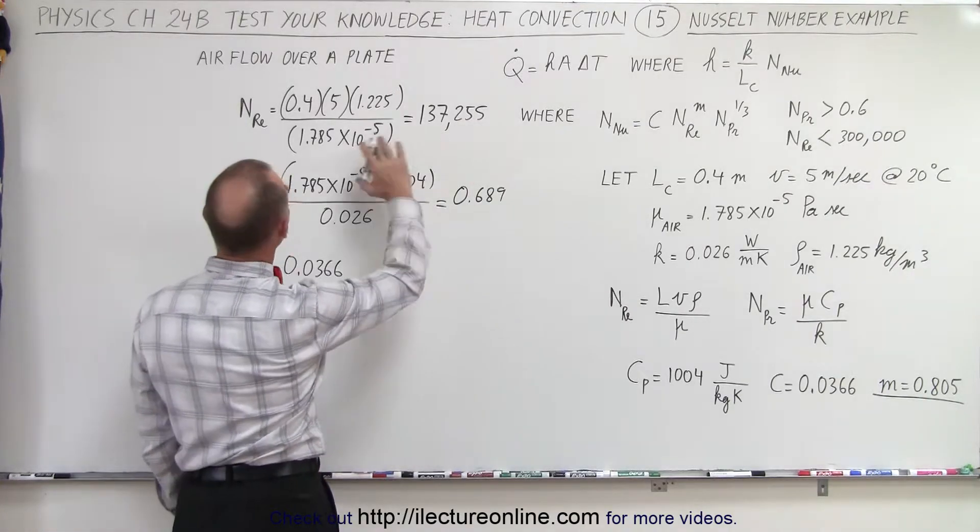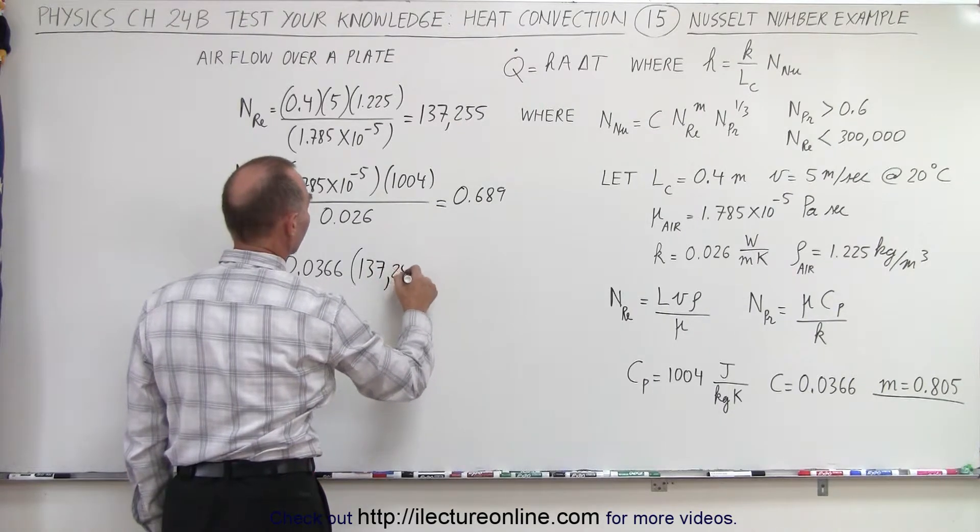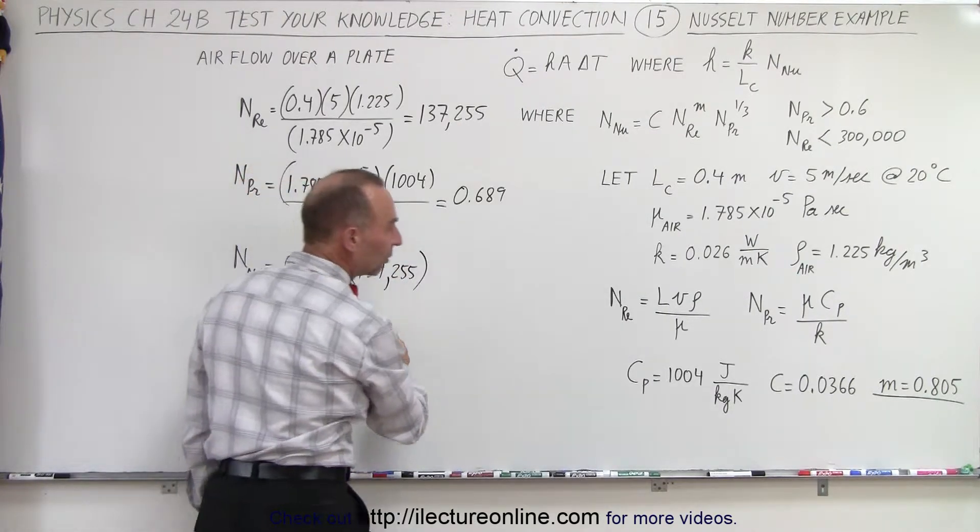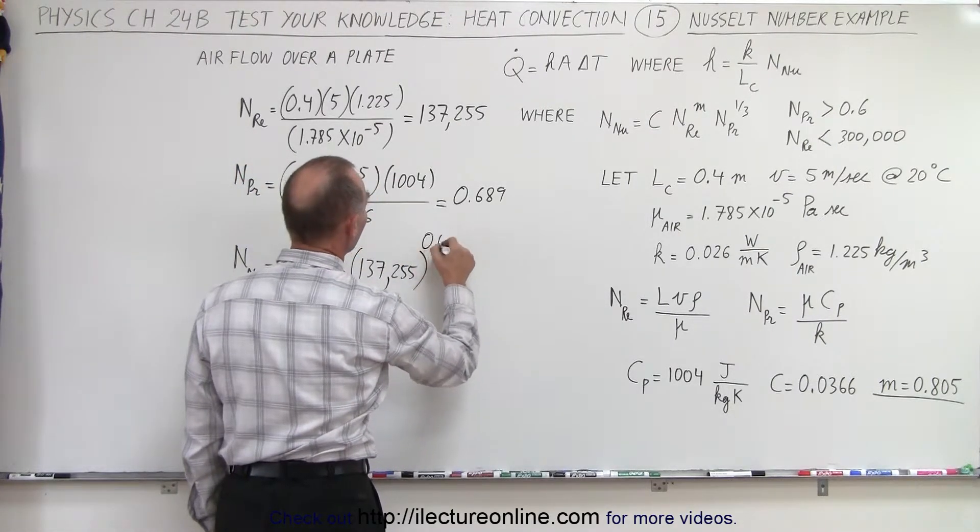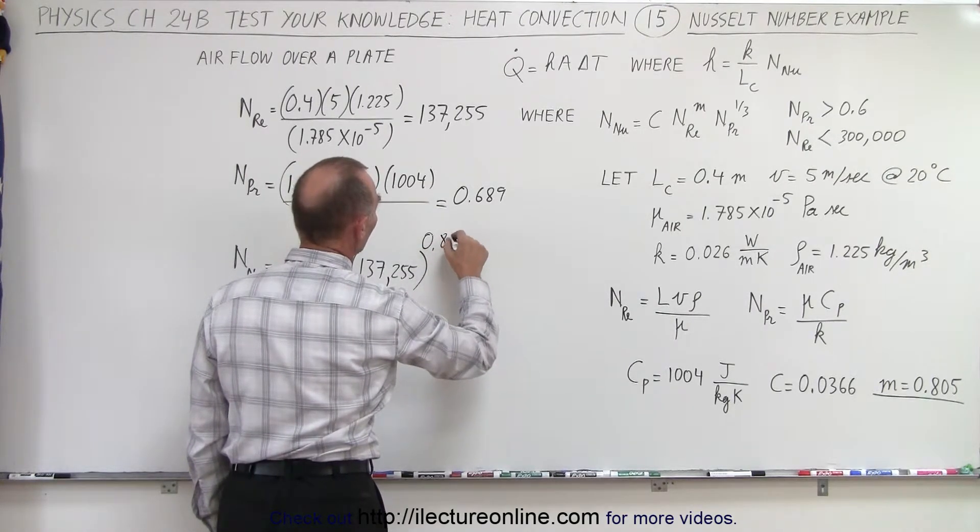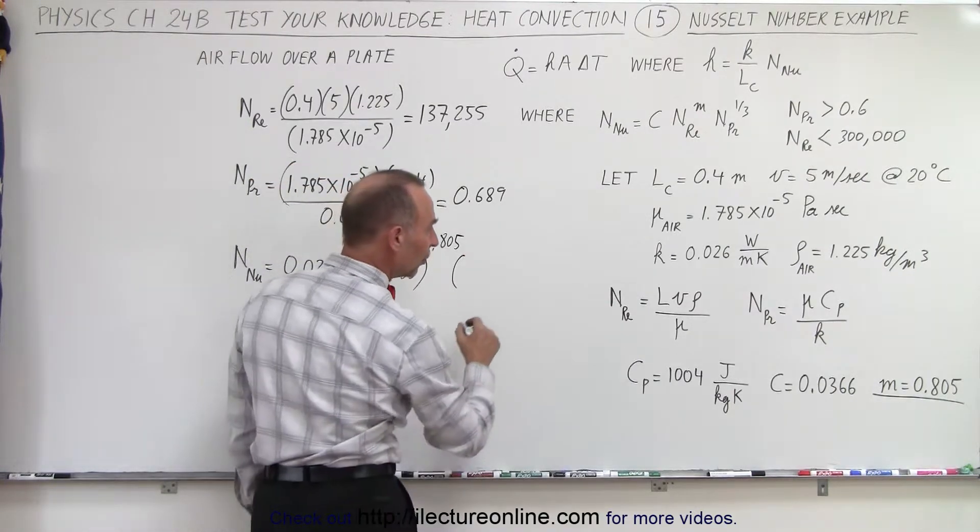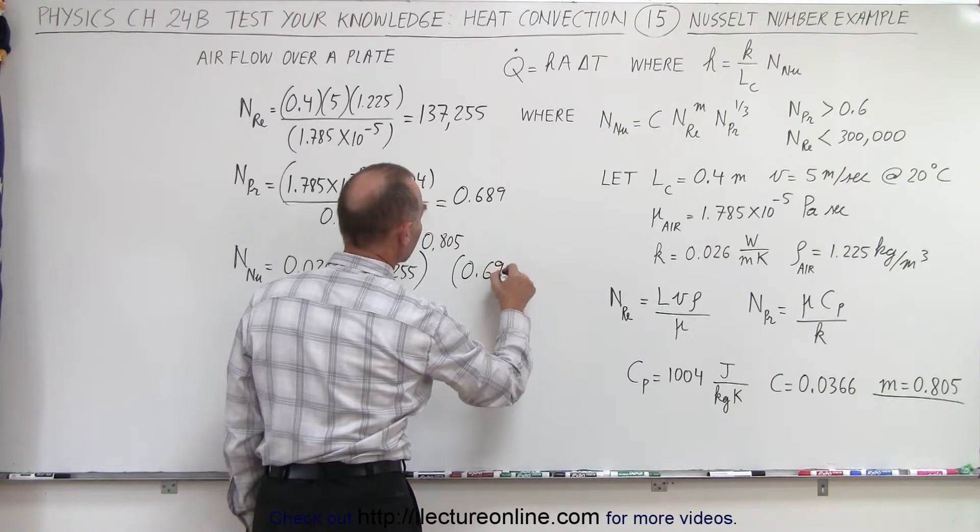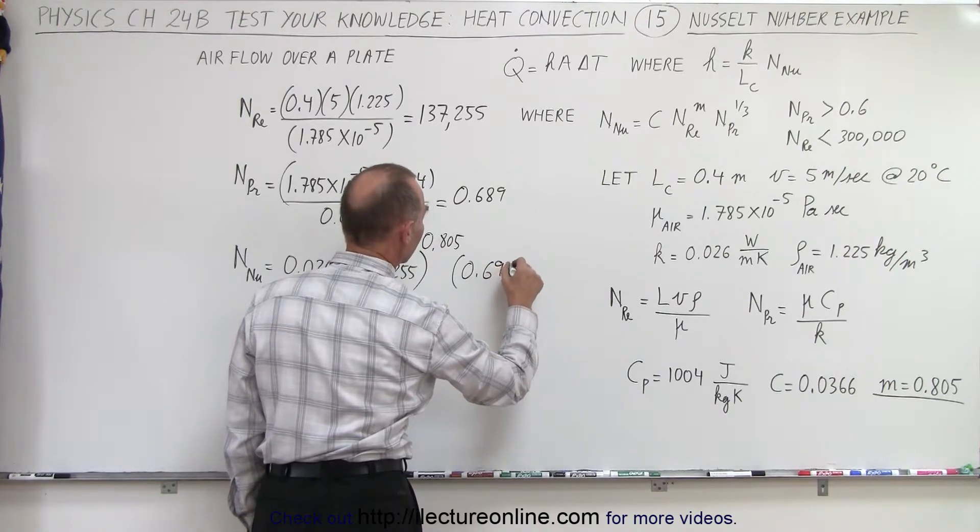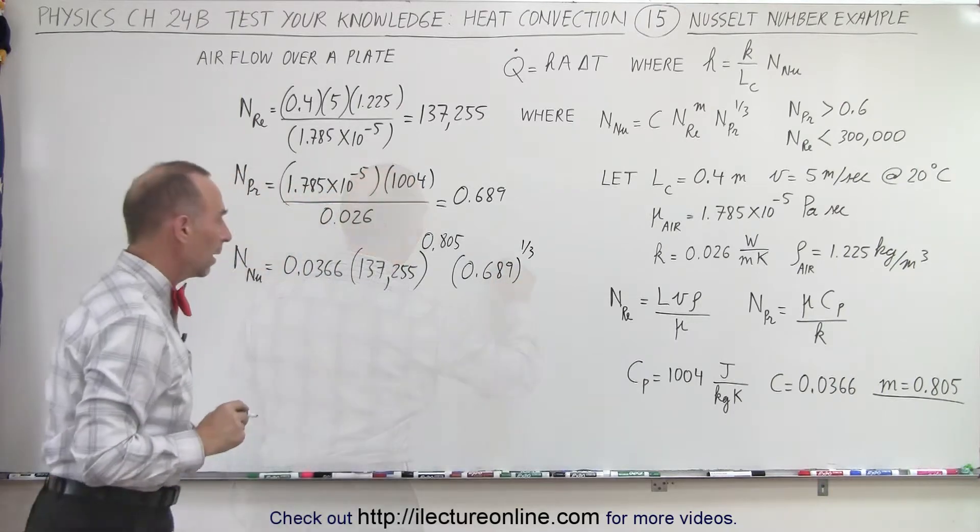And then we multiply it times the Reynolds number. The Reynolds number is 137,255, all raised to the 0.805 power. And then we multiply it times the Prandtl number, which is 0.689, raised to the 1 third power.